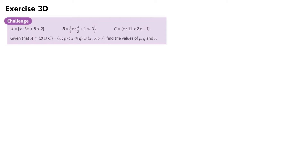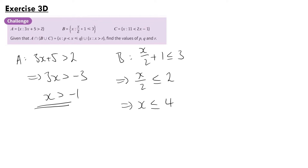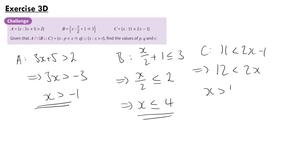For A: 3x plus 5 is greater than 2, so 3x is greater than minus 3, and x is greater than minus 1. For B: x over 2 plus 1 is less than or equal to 3, so x over 2 is less than or equal to 2, and x is less than or equal to 4. For C: 11 is less than 2x minus 1, so 12 is less than 2x, and x is greater than 6.